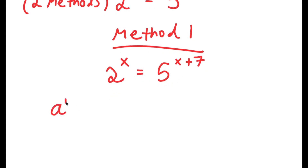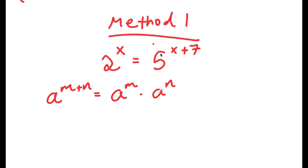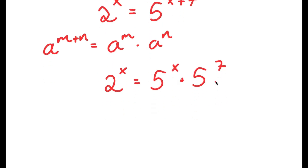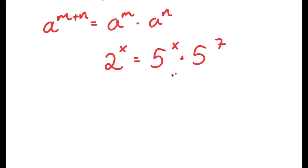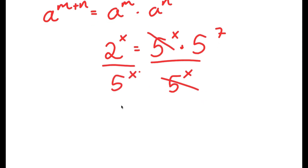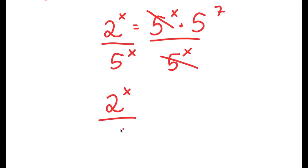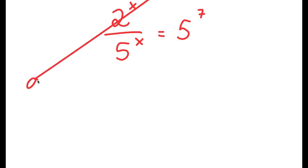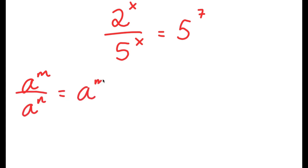If I have something in the form a to the power of m plus n, this is equal to a to the power of m times a to the power of n. So 5 to the power of x plus 7, I can write that as 5 to the power of x times 5 to the power of 7. And now from here, I'm going to divide both sides by 5 to the power of x. So these two cancel out and I get 2 to the power of x over 5 to the power of x is equal to 5 to the power of 7.